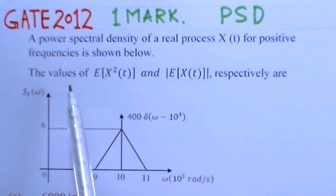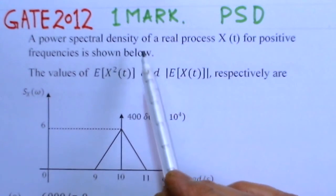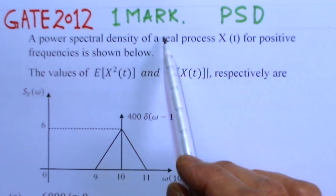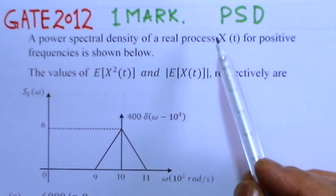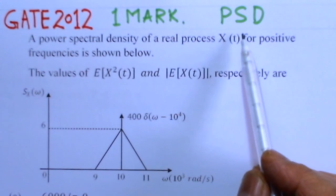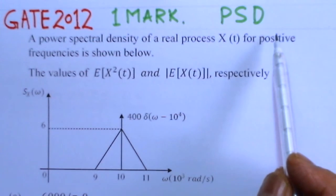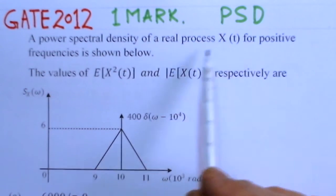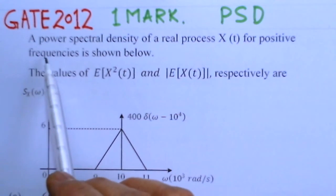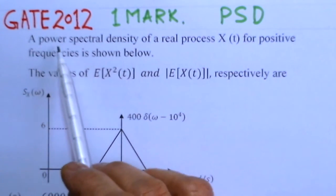The present problem is from GATE 2012 and it is a one mark problem. This problem is based on power spectral density. First we will read out this problem and then we will give its solution.